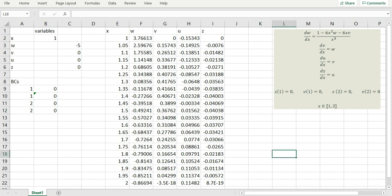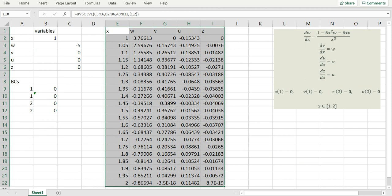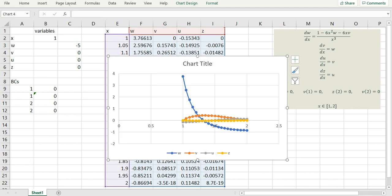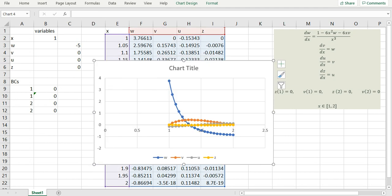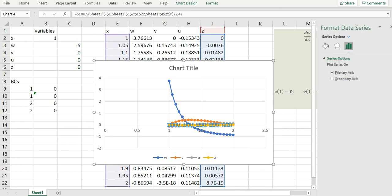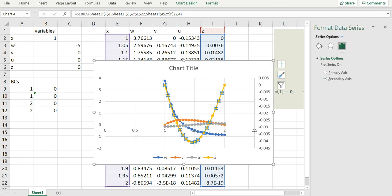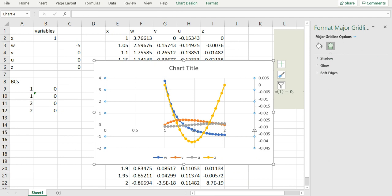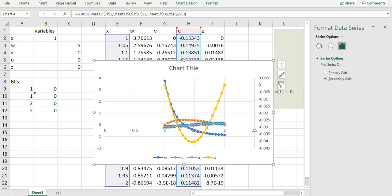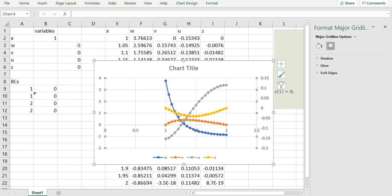Now that I have a solution, I can highlight my solution and plot the result quite easily by inserting a plot. Since the scale is different for the four variables, I can make the plot clearer by selecting a secondary axis for some of these variables. This is all it takes to solve a system of boundary value ordinary differential equations with BVSOLVE.